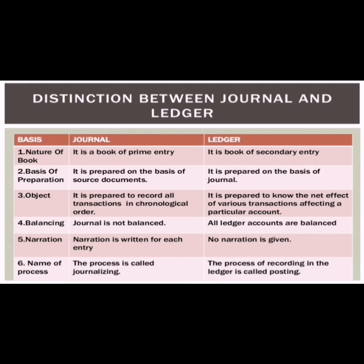Third, in terms of object: the journal is prepared to record all transactions in chronological order, whereas the ledger is prepared to know the net effect of various transactions affecting a particular account. Fourth, balancing: the journal is not balanced, but ledger accounts are balanced. Fifth, narration: narration is written for each entry in the journal, but no narration is given in the ledger. Sixth, the process of recording in the journal is called journalizing, while the process of recording in the ledger is called posting.